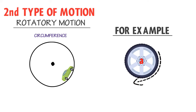At last, let me teach you the concept of the third type of motion, which is vibratory motion. The back and forth, or to and fro, motion of a body over the same path about its mean position is called vibratory motion.